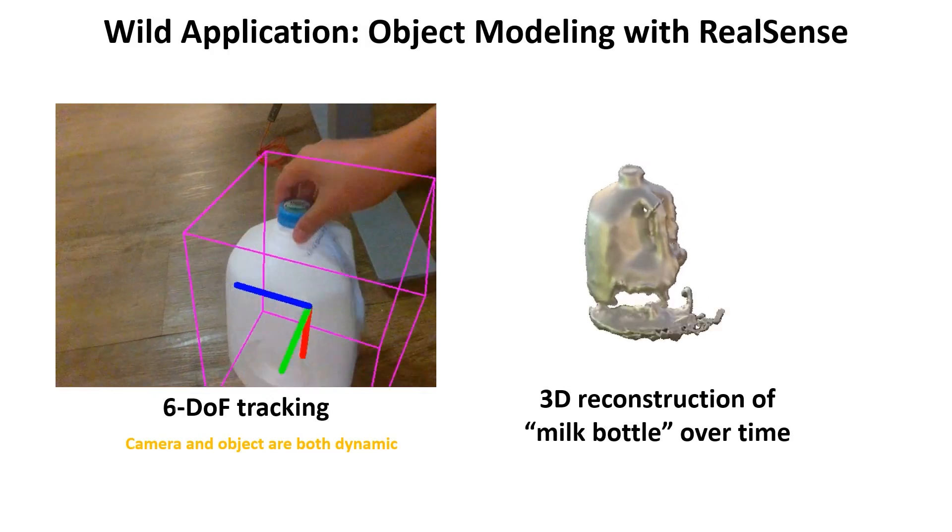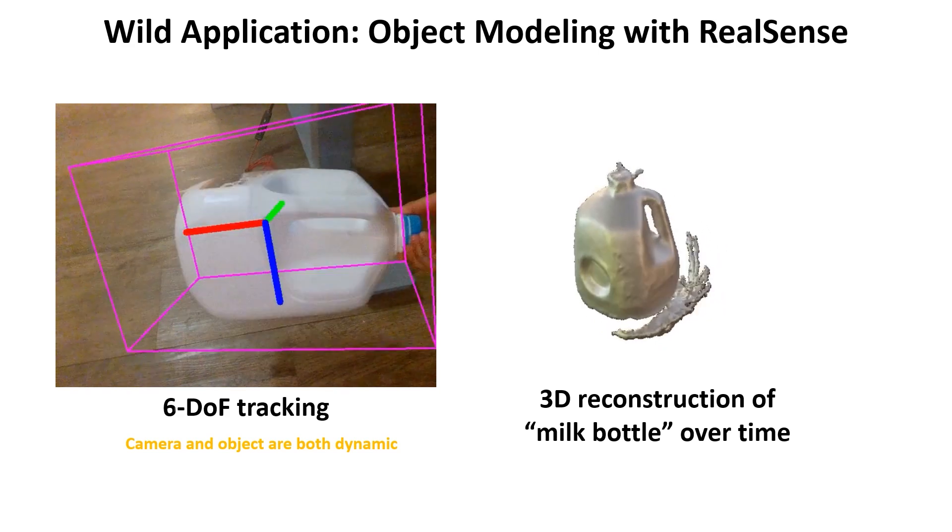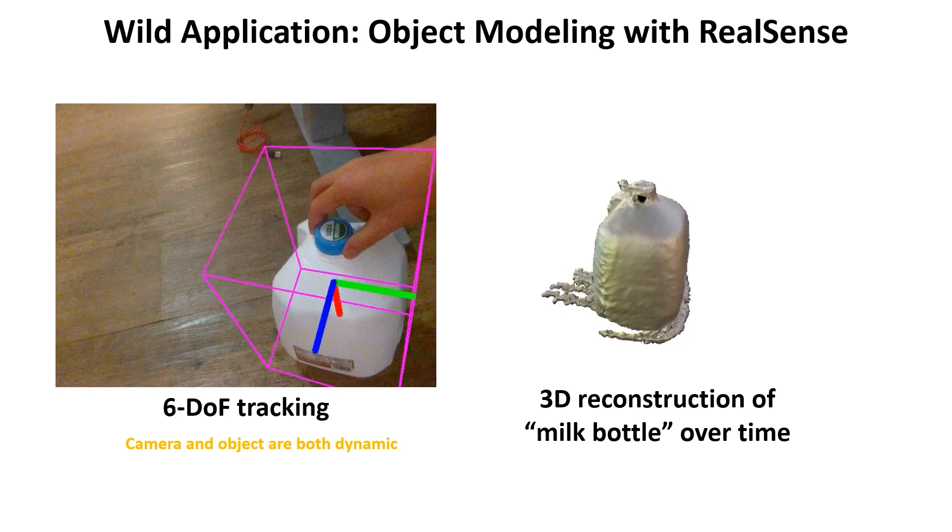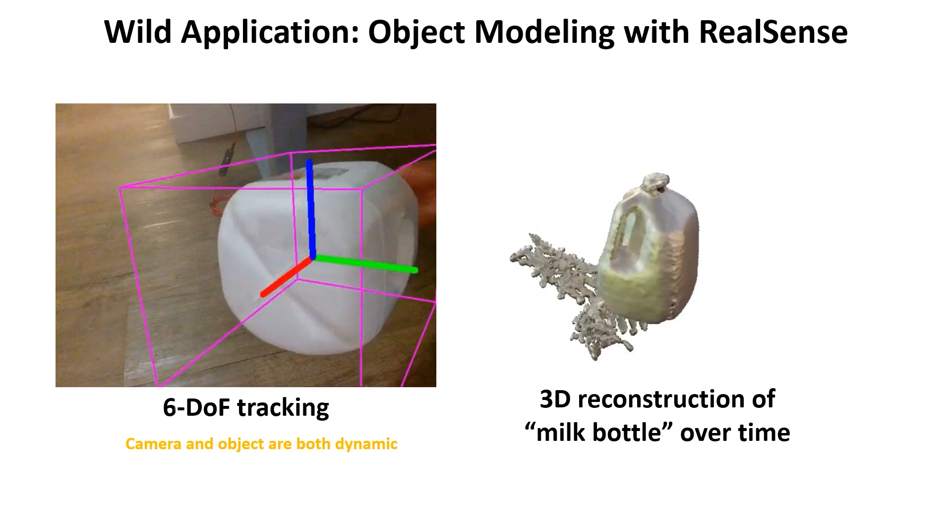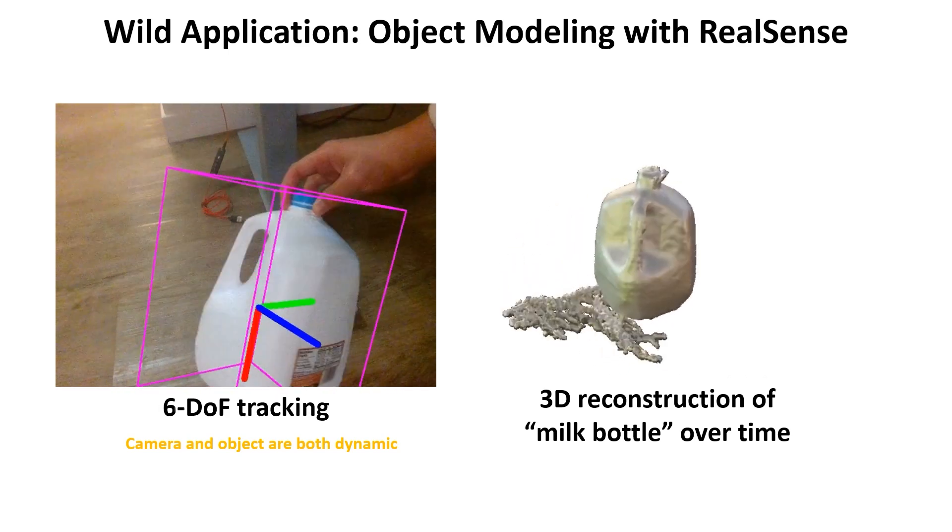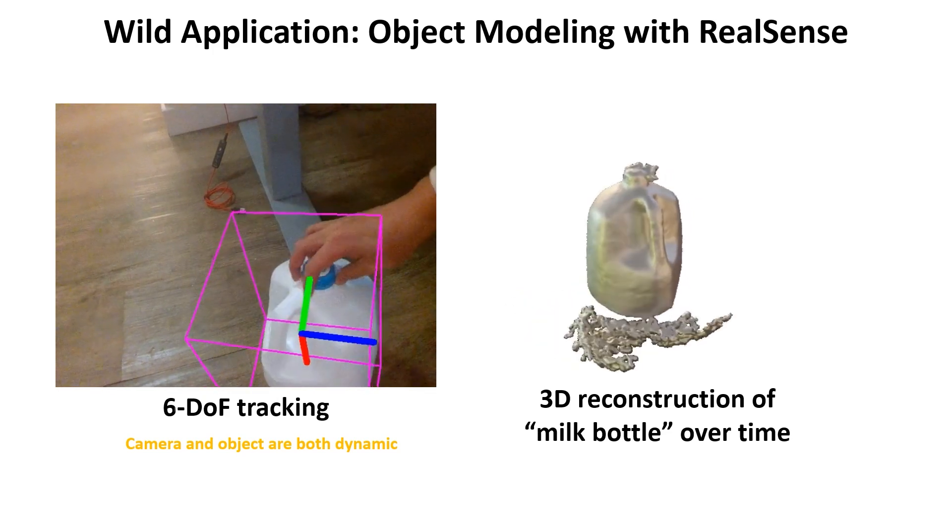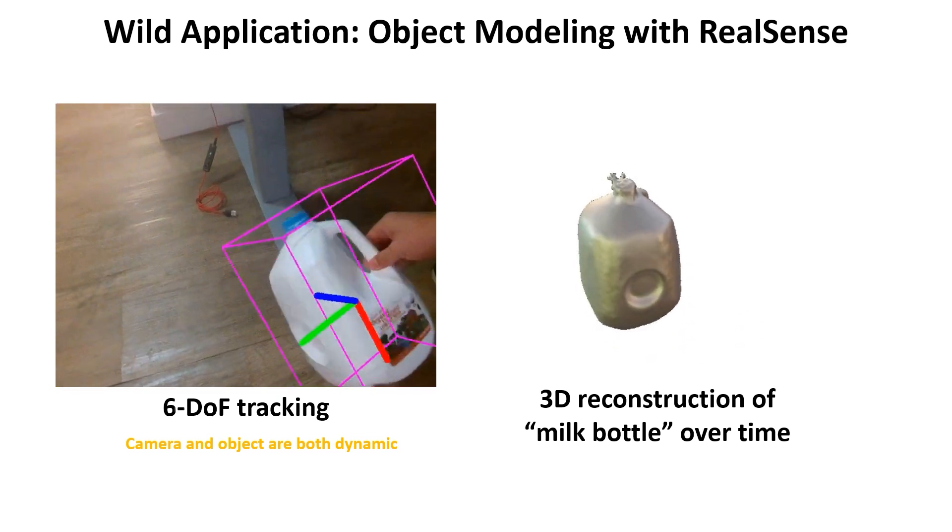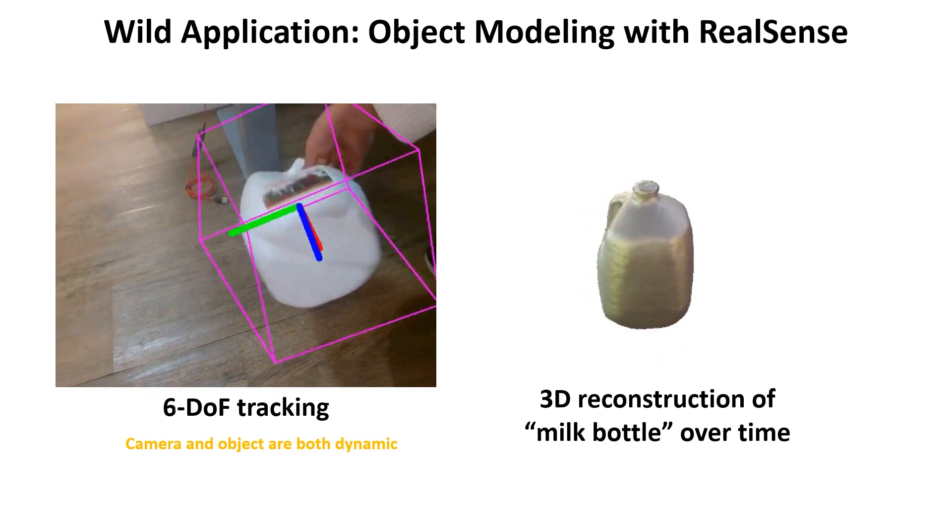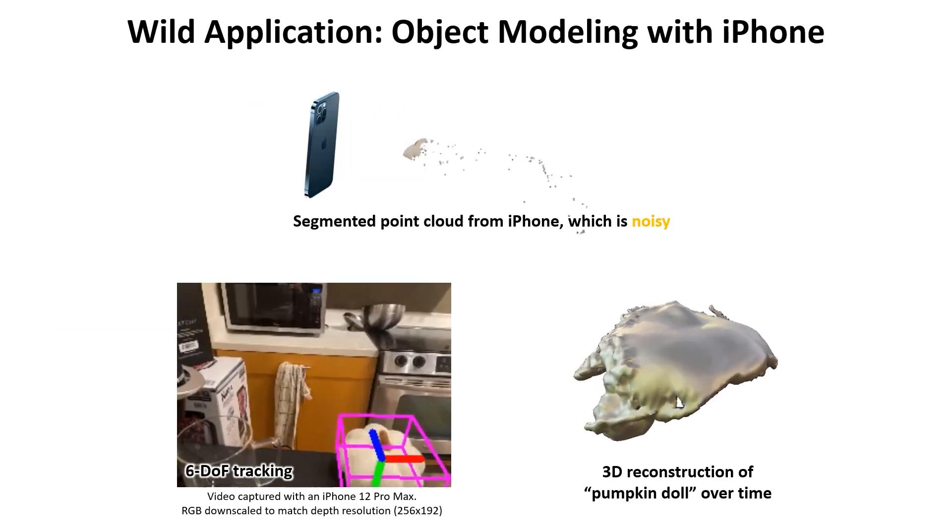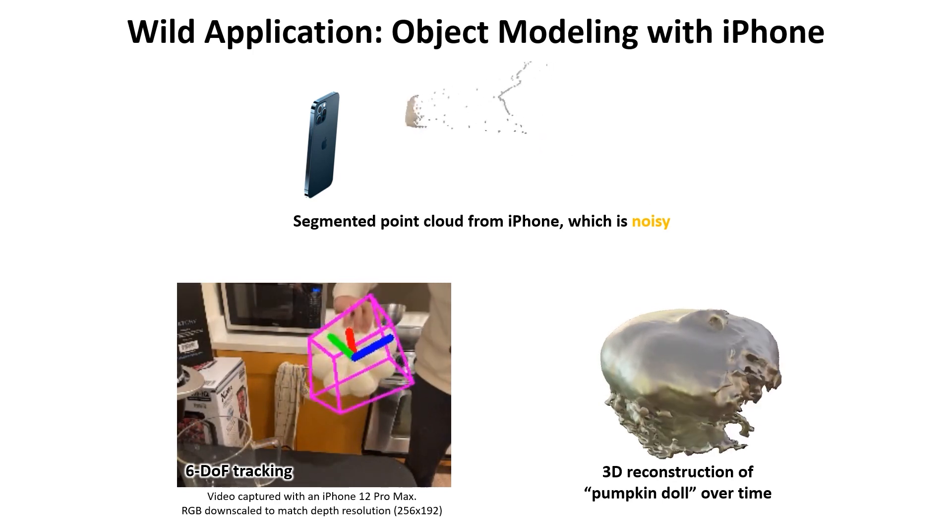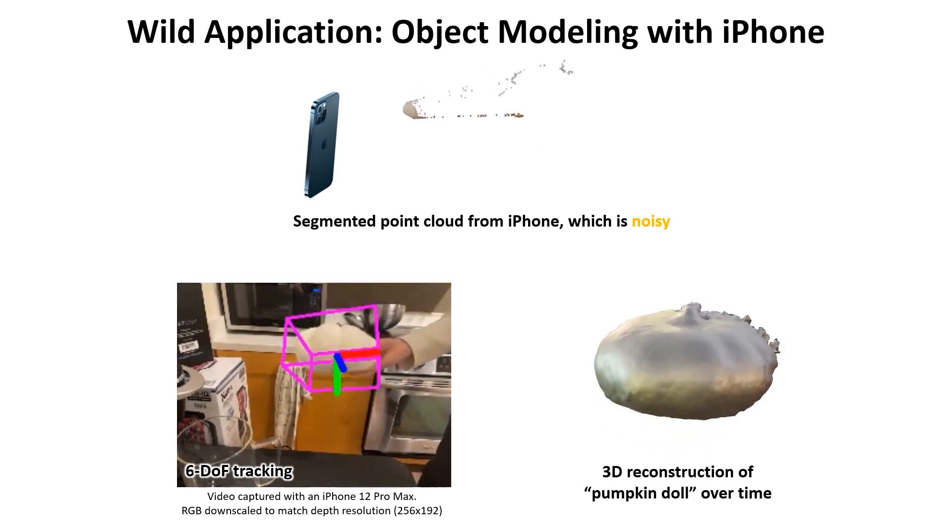Finally, we show how BundleSDF can be applied to wild settings. Here, I am carrying the camera in the left hand and use the right hand to interact with the milk jug. Therefore, both camera and the object can be dynamic, and BundleSDF is still applicable. The video is captured from an egocentric view, and the 3D box is overlaid to show possible applications of augmented reality. As more faces of the milk are observed, the neural reconstruction gradually converges to a complete shape. Users can also apply BundleSDF immediately to their own objects with an iPhone without worrying about out-of-distribution generalization.